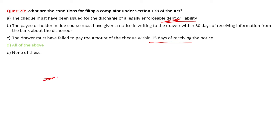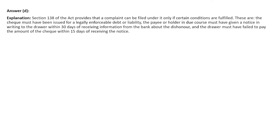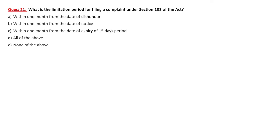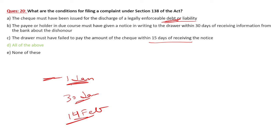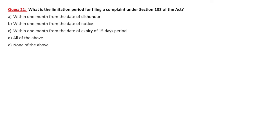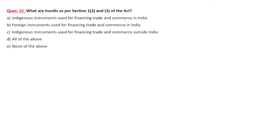For example: on 1st January the check bounces. Within 30 days — by 30th January — you need to send a notice. A 15-day notice period then runs, ending around 14th February. Within one month after 14th February, the party needs to file the case. That is the limitation period under Section 138.